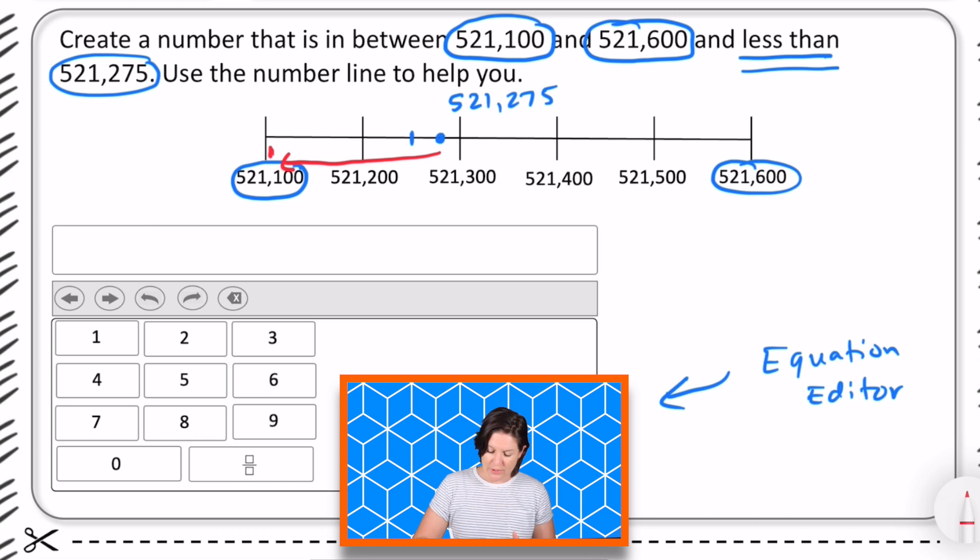So really you could choose 521,101, 521,102, 521,103, all the way up to 521,274, because that's less than what we've got right there.